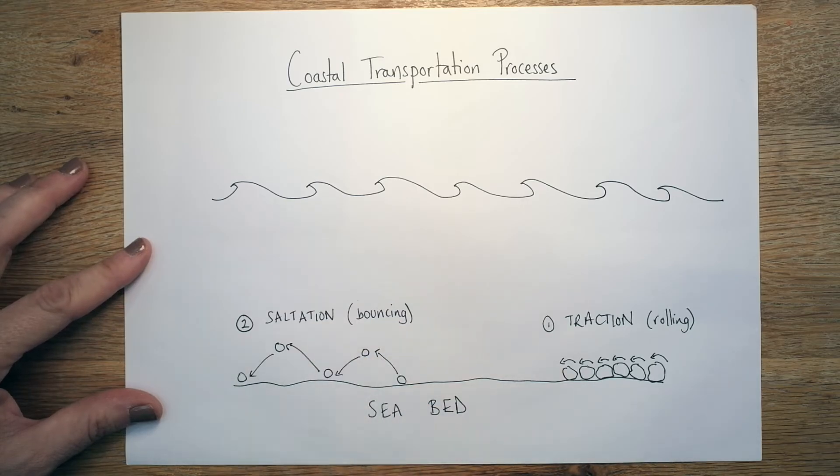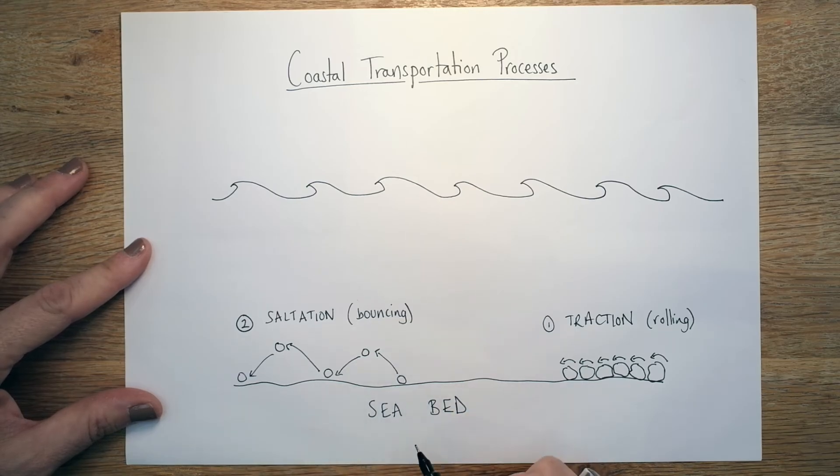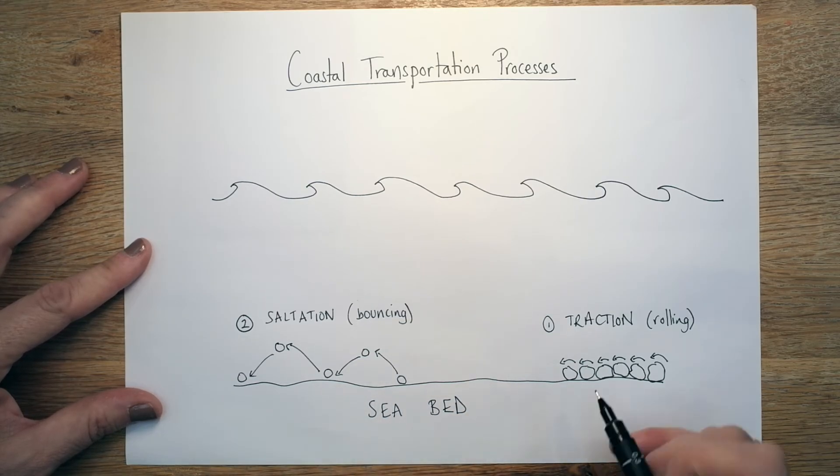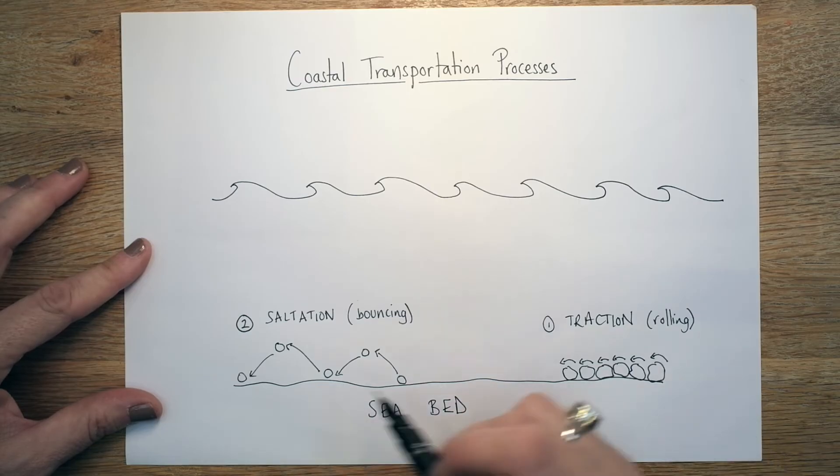And that kind of bouncing movement, again, it can be quite busy, quite violent. It can cause them to almost erode slightly and knock the rough edges off. But also mainly, it's a type of transportation. So it's going to be moving them along the coast, possibly in the direction of longshore drift.